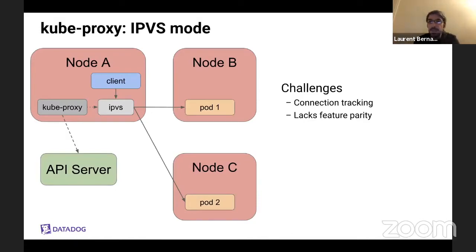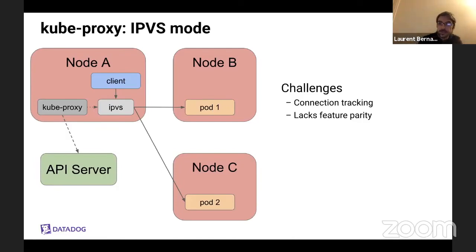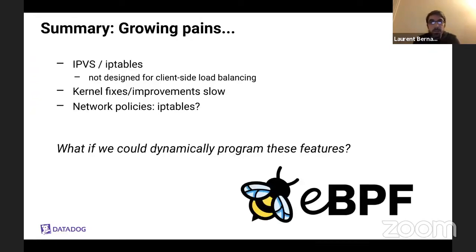IPVS sounds very promising, but we also faced quite a few challenges. If you're familiar with connection tracking issues, when you use IPVS you have it two times — once for IPVS and once for Netfilter. IPVS has made huge progress, but it's still lacking in feature parity compared to iptables, so we had to be quite involved with the community to make it work. We were facing growing pains: iptables was not designed to be a load balancer, and IPVS was not designed to be a client-side load balancer for Kubernetes. And as was mentioned, getting kernel fixes into your real environment can take some time.